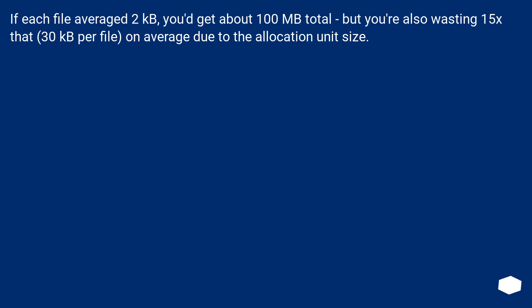If each file averaged 2 kilobytes, you'd get about 100 MB total, but you're also wasting 15 times that — 30 kilobytes per file — on average due to the allocation unit size.